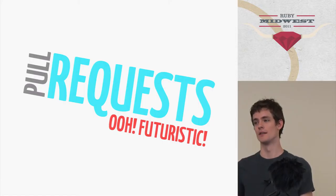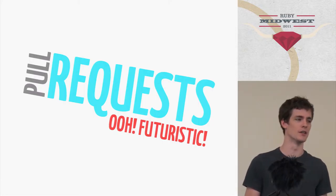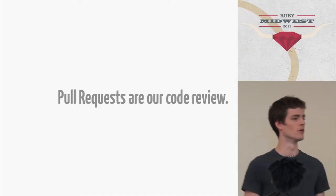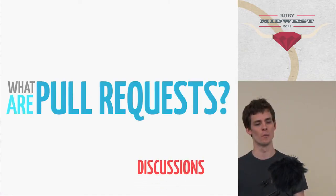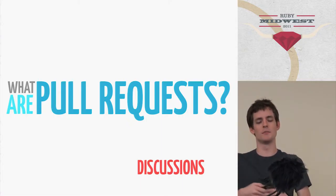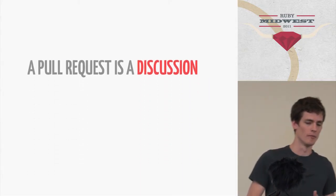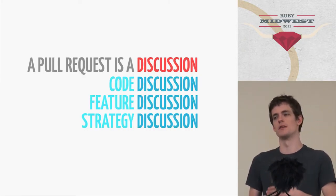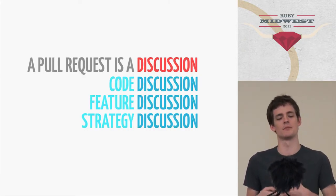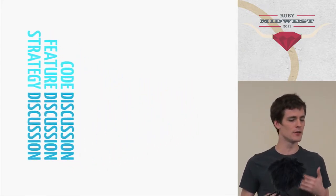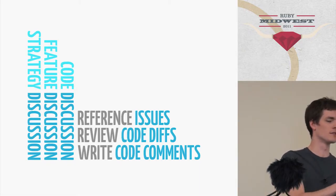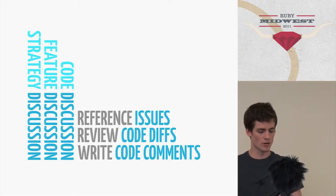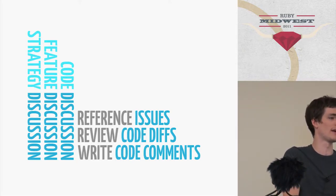How do you keep up code quality? Our response to that is pull requests — this is central to everything we do. Pull requests are a code review. They're a simple discussion about a distinct piece of code — a discussion about that particular feature, that particular strategy. You can reference issues in it, reference other bits of code diffs, write code comments. It's all about figuring out how you make a discussion on a piece of code, and from that point you can figure out whether you want this in the actual codebase. All this happens on a separate branch, so none of it is dangerous.